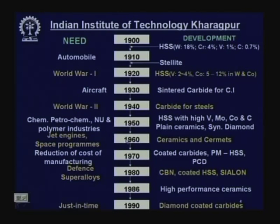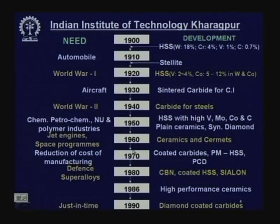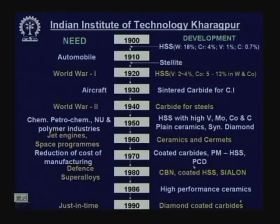1960 was another breakthrough: jet engine and space programs demanded very fast tooling capable of machining a variety of materials. Ceramics and cermets of various types were developed. By 1970, cemented carbide tools were coated by various materials through powder metallurgical processes, high speed steel quality was enhanced by powder metallurgy, and polycrystalline diamond was developed for wide application.